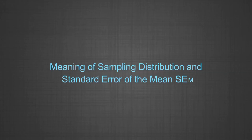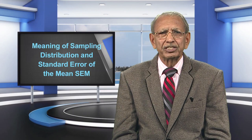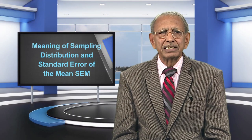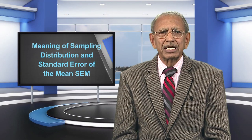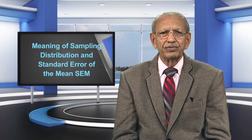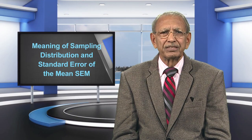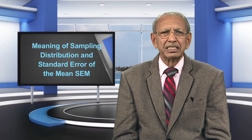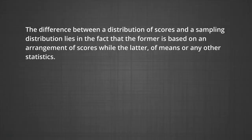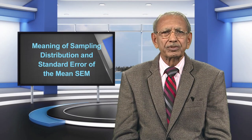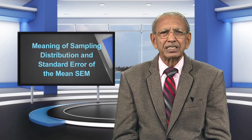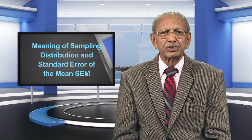The meaning of sampling distribution and the standard error of the mean, written as SEM: if a large number of samples are taken from the same population and the same test administered to them under identical conditions, the average scores or means of these samples can be calculated. If the means so obtained are arranged in the form of a frequency distribution and plotted on a graph as a frequency polygon, we obtain the sampling distribution of means. It has been found that even if the distribution of scores is skewed, the sampling distribution tends to reach a normal shape. However, it may not be true in the case of very small samples.